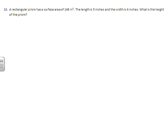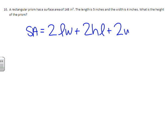Number 10. A rectangular prism has a surface area of 148 inches squared. The length is 5 inches and the width is 4 inches. What is the height? We're going to start with our formula for rectangular prism. So surface area equals 2 times length times width plus 2 times height times length plus 2 times width times height.